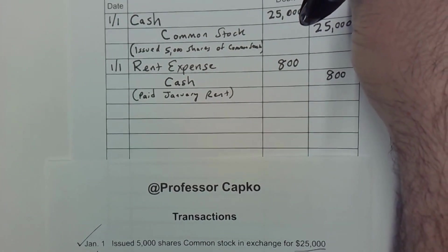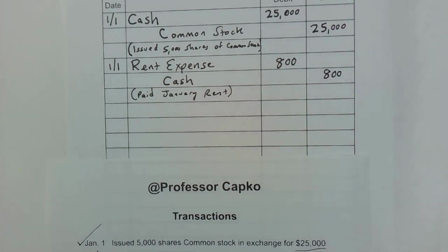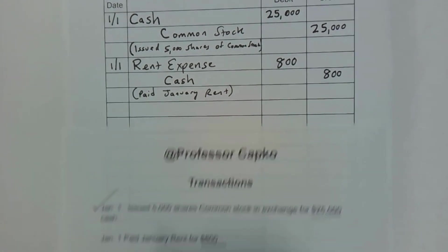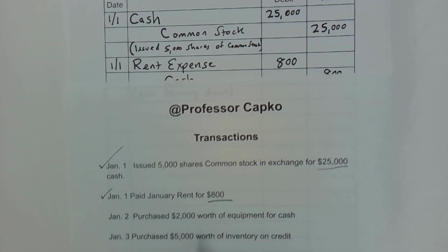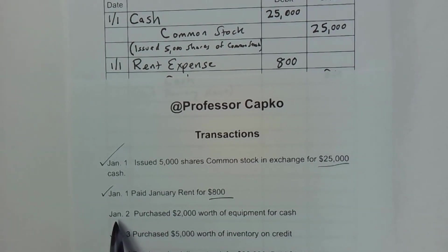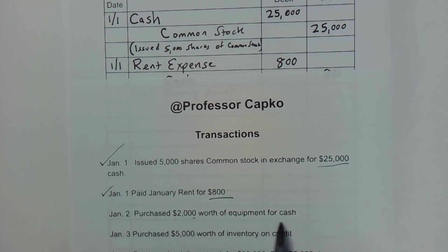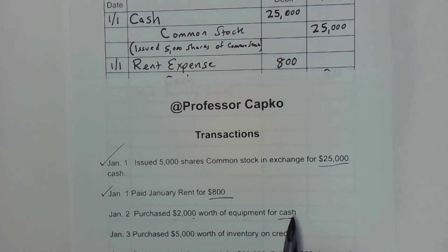Let's go ahead and slide this up so we can have some room. And I can check off that second transaction. The next transaction on January 2nd — I purchased $2,000 worth of equipment for cash. Cash is involved, and I know that cash is an asset: it goes up with debits and down with credits.